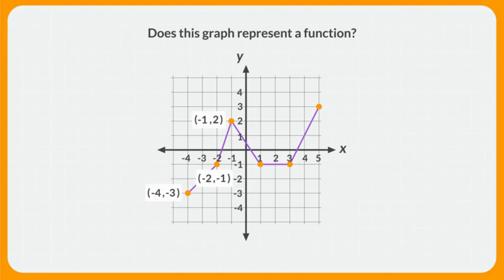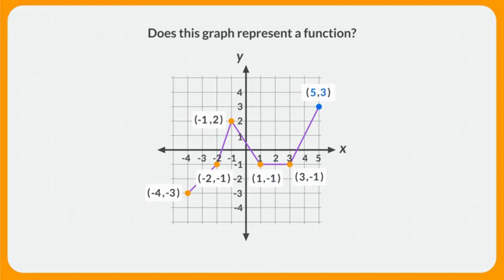So far, this is a function. But let's keep going. The next point's coordinates are 1, negative 1, and this point is 3, negative 1. The inputs 1 and 3 share an output of negative 1, but that's okay. To be a function, each input can only have one output, but each output can have more than one input. And this last point is at 5, 3.